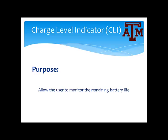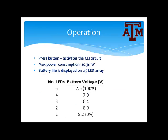The purpose of the charge level indicator is to allow the user to monitor the remaining battery life. To operate the charge level indicator, the push button is pressed, which activates the charge level indicator circuitry. The maximum power consumption of the CLI is 20.3 milliwatts. The battery life is displayed on a 5 LED array. When 5 LEDs are illuminated, the battery terminal voltage is 7.6 volts or 100% capacity. When only 1 LED is illuminated, the battery terminal voltage is 5.2 volts and 0% capacity.